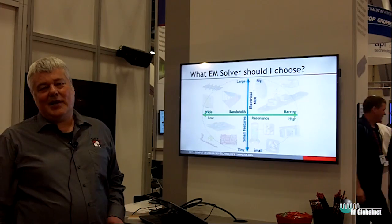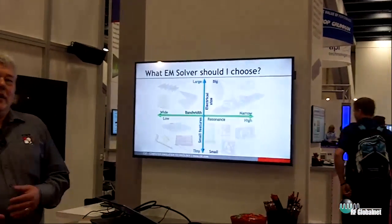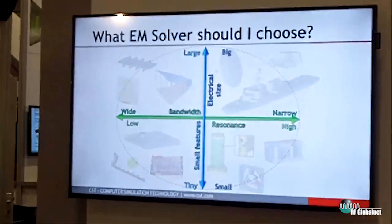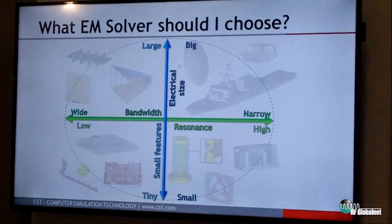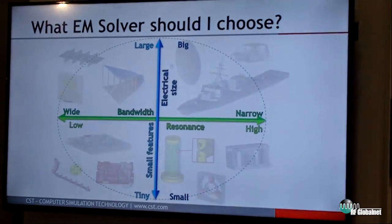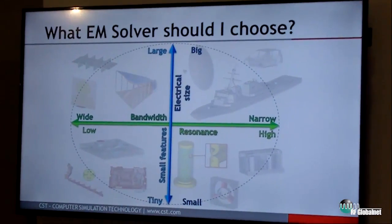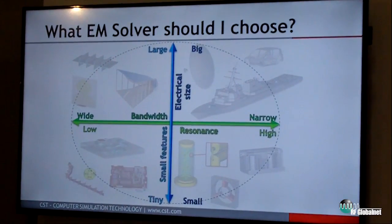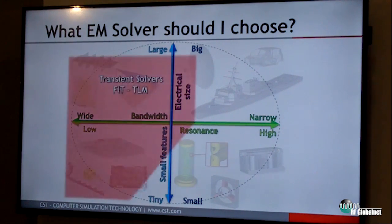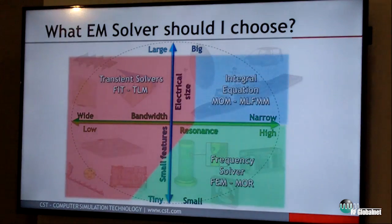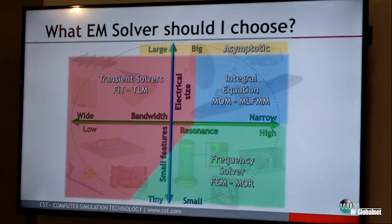Generally, from a technical perspective, you can divide the application areas into rather electrically large structures or small structures, and you can also divide them into narrow band or wide band structures. This is what you see in the chart. If you are looking for wide band structures that can also be rather large, you would probably go for a transient solver like the FIT solver or TLM solver in the CST Studio Suite.